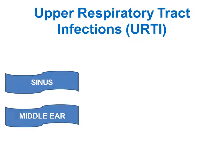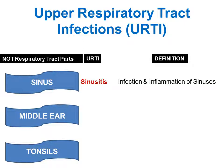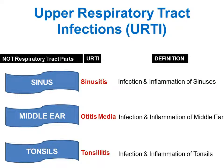Sinuses, middle ear and tonsils are not respiratory tract parts — we do not breathe air through them. But if there is infection and inflammation of the sinuses, middle ear, or tonsils, these are referred to in textbooks as upper respiratory tract infections. Sinusitis is infection and inflammation of the sinuses. Otitis media is infection and inflammation of the middle ear. Tonsillitis is infection and inflammation of the tonsils.